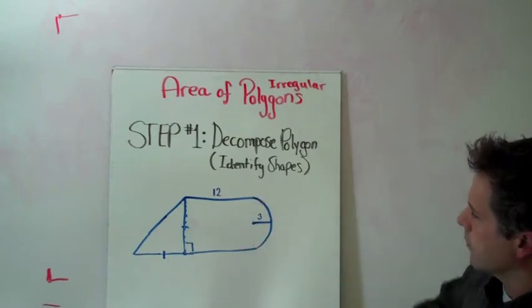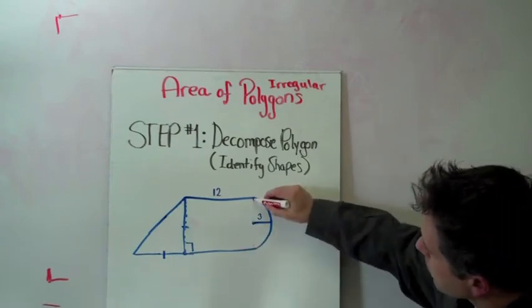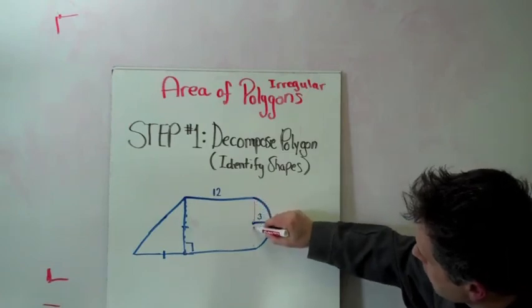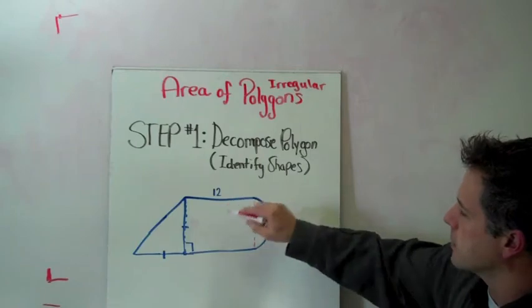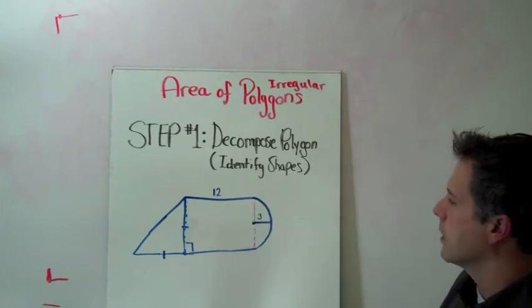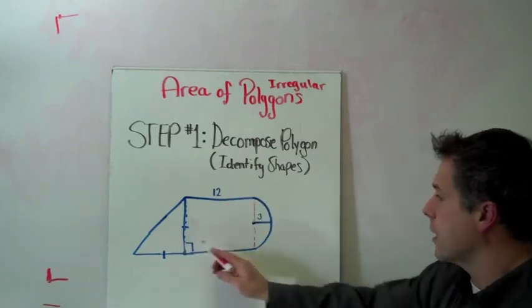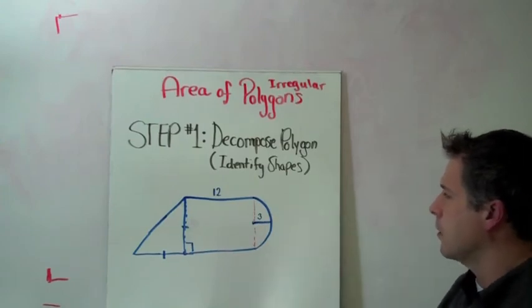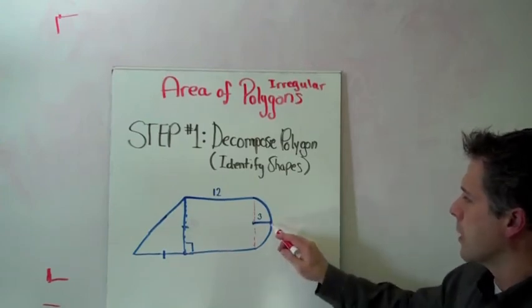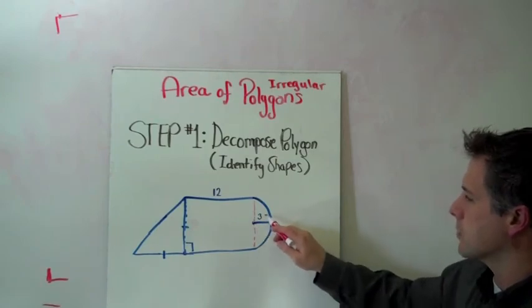Over here we have, if we drop a perpendicular line straight down here, we can see that we have a half circle. And in the center of course we have a rectangle. So we have a triangle, a rectangle, and half of a circle. Well, what are we going to do with that? Well first of all this circle is very helpful because it tells us here that the radius is 3.